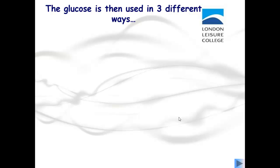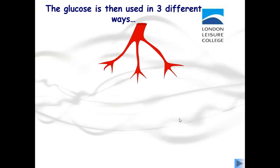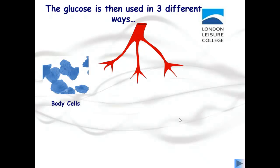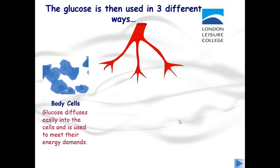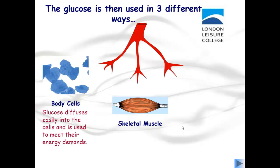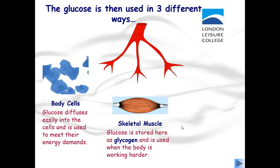When glucose is broken down, it is used in three different ways. First, glucose diffuses into the body cells and is used to meet their energy demands. It's also stored in skeletal muscle as glycogen and used when the body is working harder.